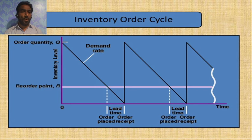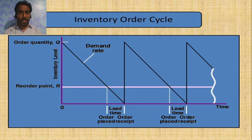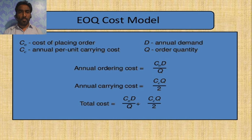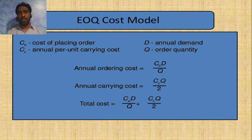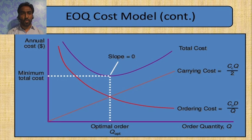In the EOQ graph, order quantity is denoted as Q and reorder point as R. The graph shows demand rate, lead time, order placed, and order received. In the EOQ cost model formula: C stands for cost of placing an order, CC stands for annual per-unit carrying cost, D stands for annual demand, and Q stands for order quantity. From these we can derive the annual order cost, annual carrying cost, and total cost.